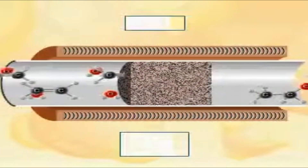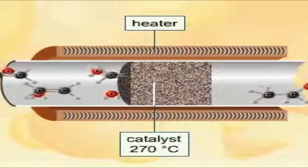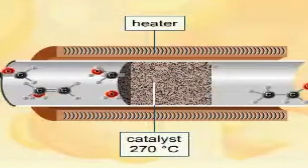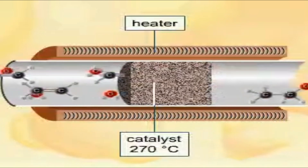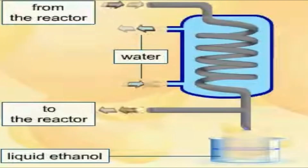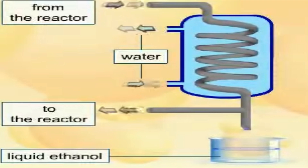The industrial process is continuous. A hot mixture of ethene and steam is passed over phosphoric acid, absorbed on a porous support. The ethanol produced is separated by condensation as the reaction mixture is cooled with water.